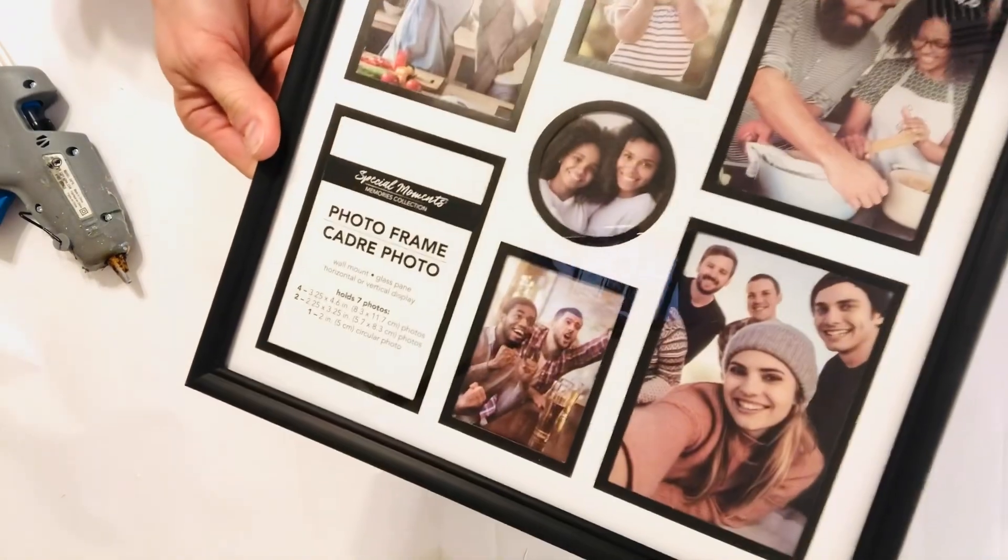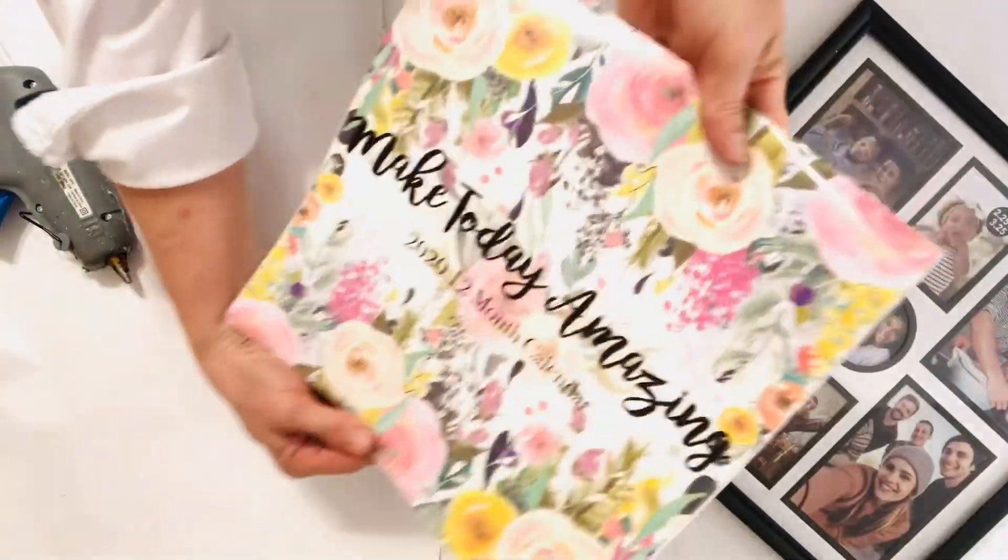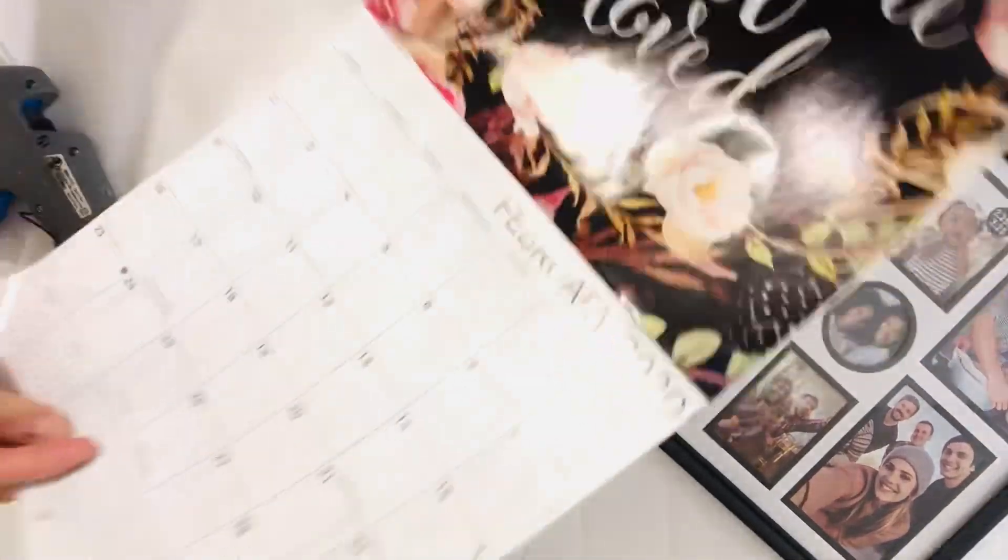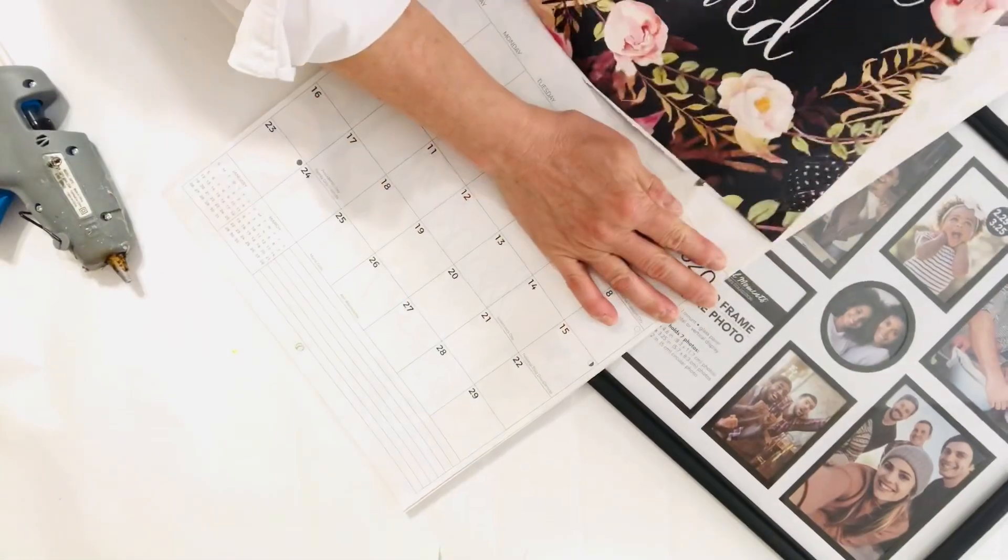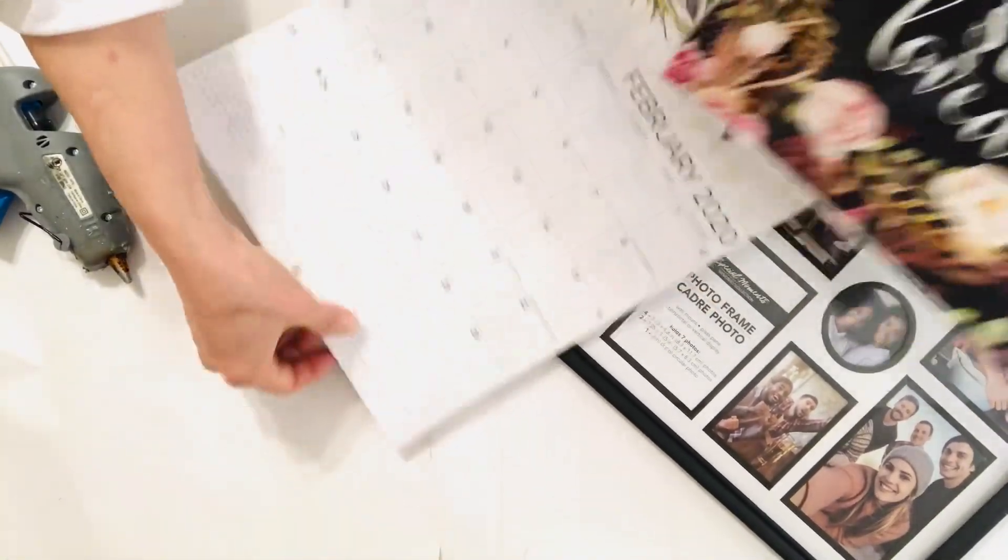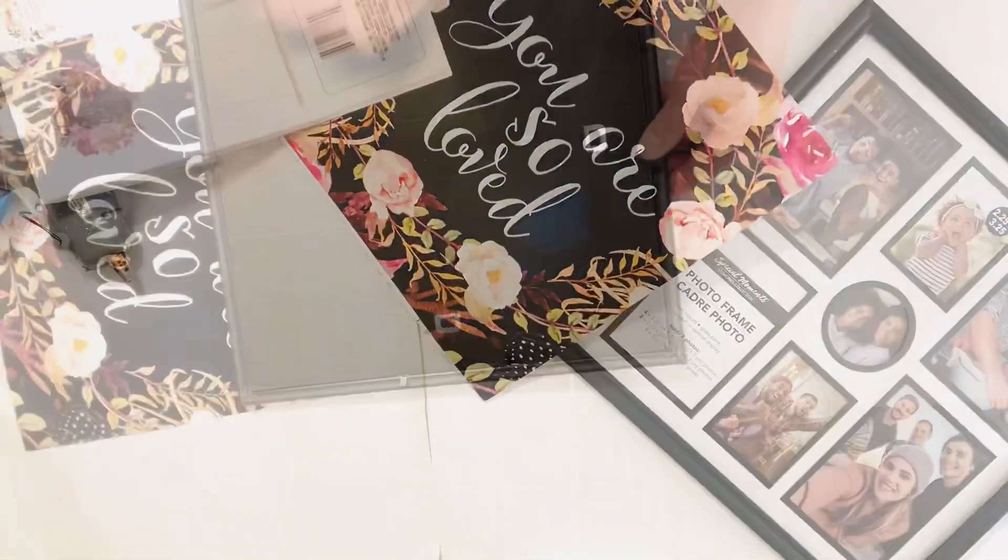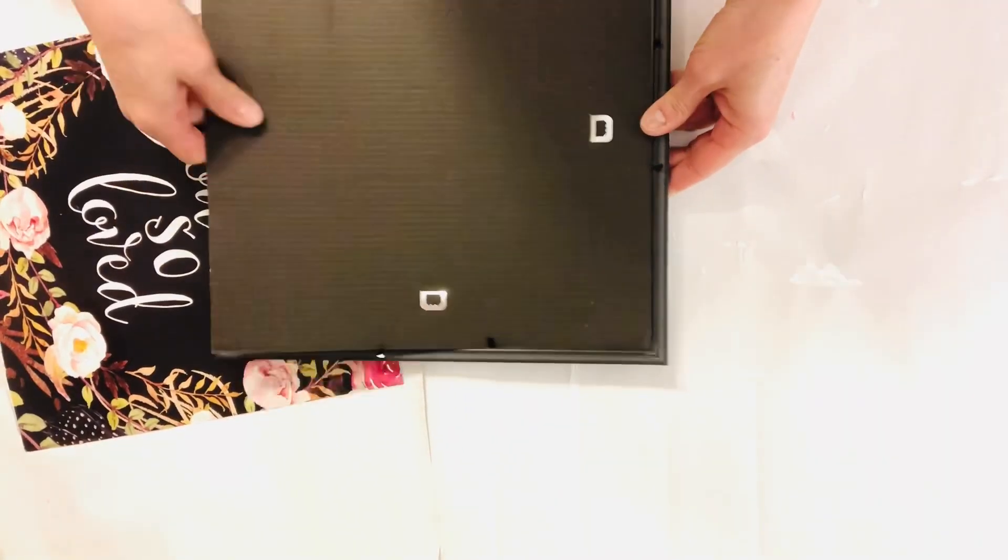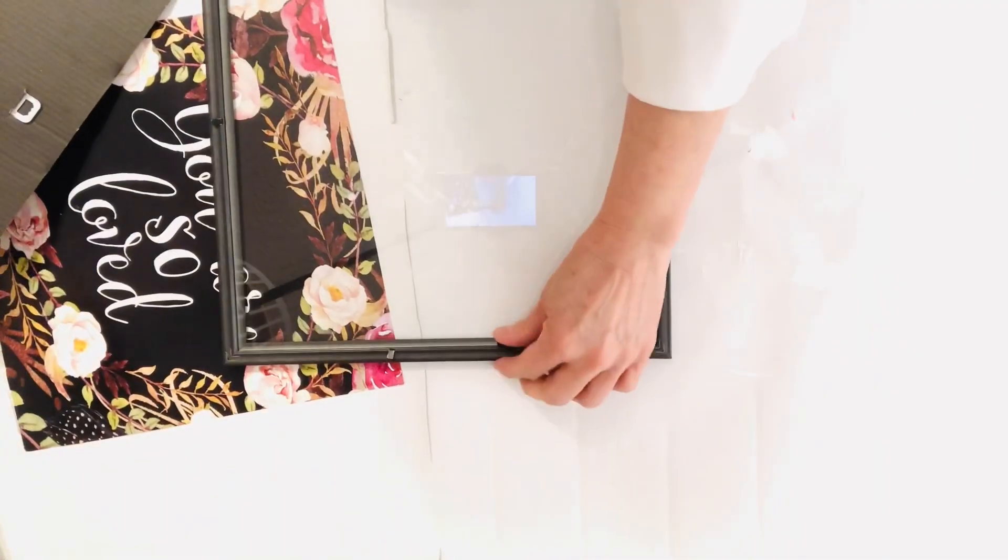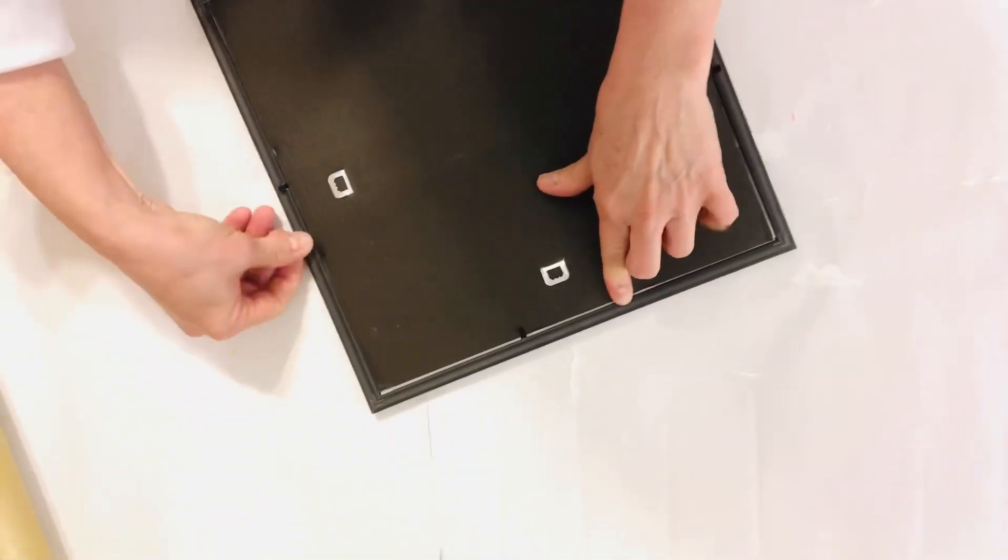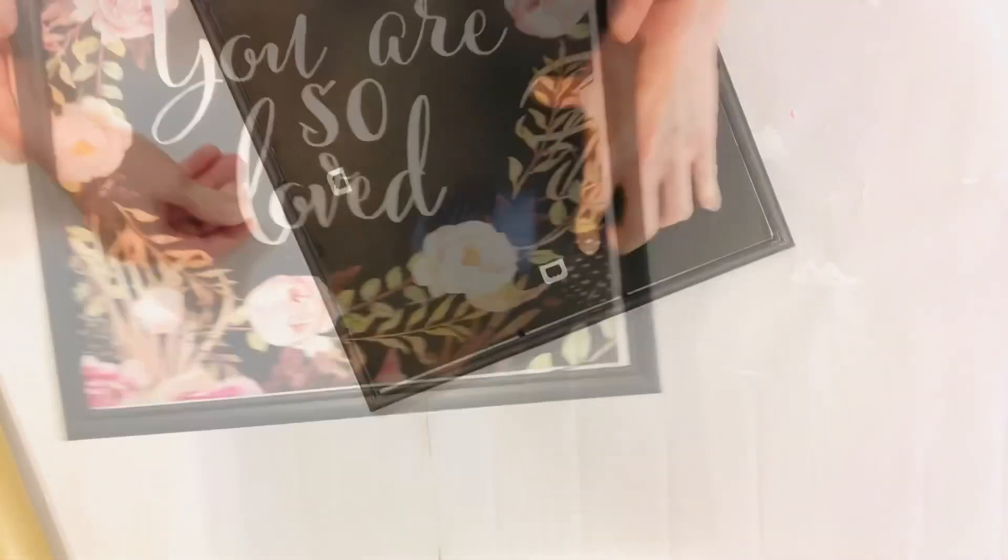These square picture frames from Dollar Tree are the exact size you will need to frame any calendar art and I'm showing you the calendar I got this graphic from but Dollar Tree carries so many beautiful colors and styles of calendars and all you'll need to do is turn to the month of February and frame something to make a beautiful piece of ultra simple art.